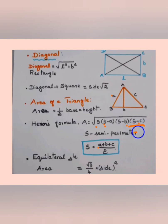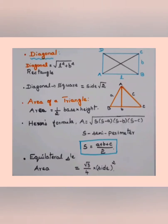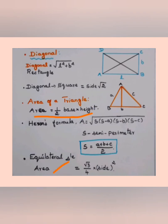For an equilateral triangle, the area formula is: A = (√3/4) × side². For a general triangle with different sides and a known base and height, use A = ½ × base × height. For an equilateral triangle, use A = (√3/4) × side².